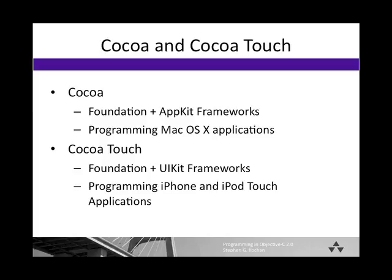Before we do that, let's have a little background and learn some terminology. You've heard about Cocoa and Cocoa Touch. Cocoa is basically a name given to a combination of two frameworks: the Foundation Framework, which you've learned about in Part 1 of this course, and the AppKit Framework. The AppKit is responsible for presenting the UI to the user for a Cocoa application and handling all the events associated with that. Cocoa is used for programming native Mac OS X applications — apps like Safari, iTunes, and Mail, for example, would be written using Cocoa.